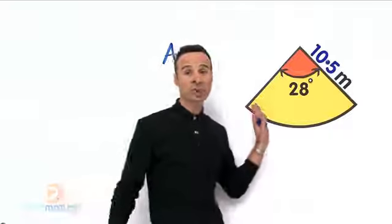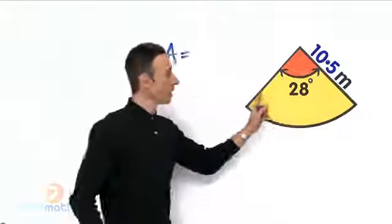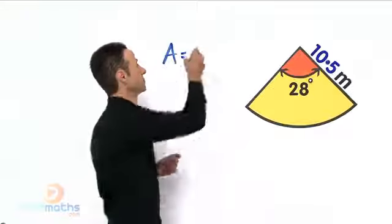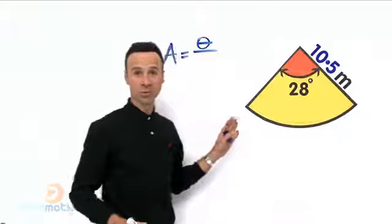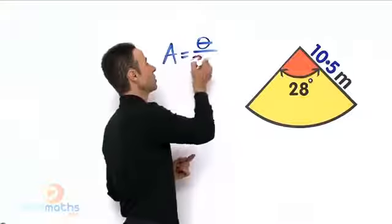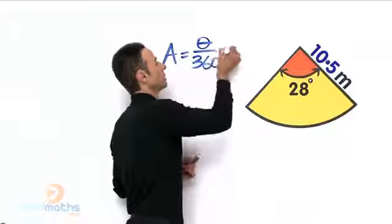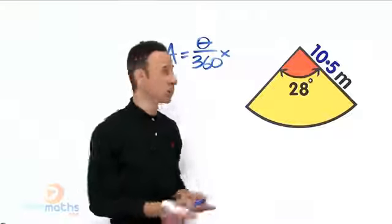Now first of all, the first part of the formula is the fraction part of it, and that angle there we will call it theta. The total of the whole circle, the whole disk, the whole birthday cake, is 360 degrees of course, times the area of a conventional full circle, which is pi r squared.